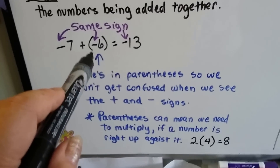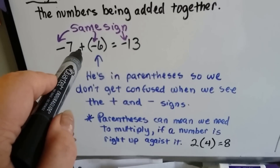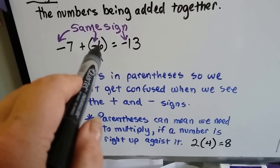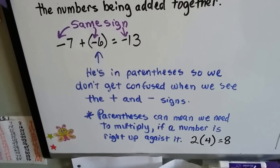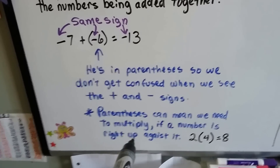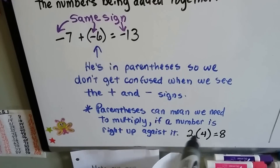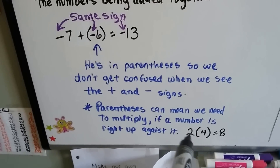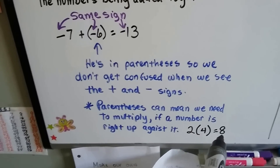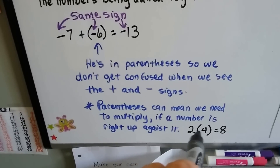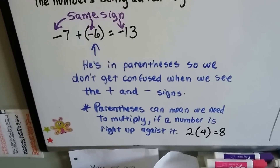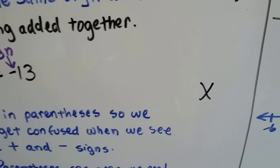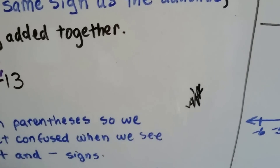This number is in parentheses so we don't get it confused with the plus sign. It helps our eyes see that we're adding a negative. Remember that parentheses in algebra can also mean multiplication — if a number is right up against a parenthesis like that, it means multiply. For example, 2(4) means two times four, which equals eight.